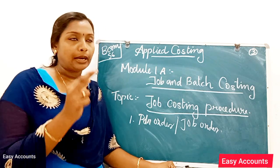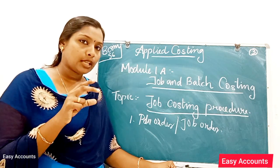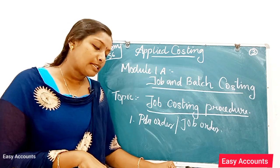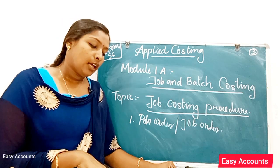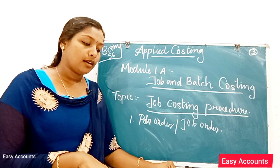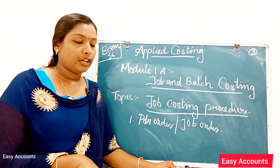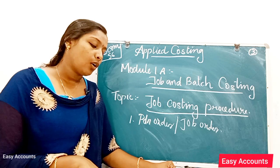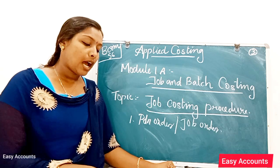The job cost sheet covers direct material, direct labor, and overhead. The labor cost required for each job can be ascertained with the help of time cards and job cards. Each job will be charged with the overhead as per the standing order number.